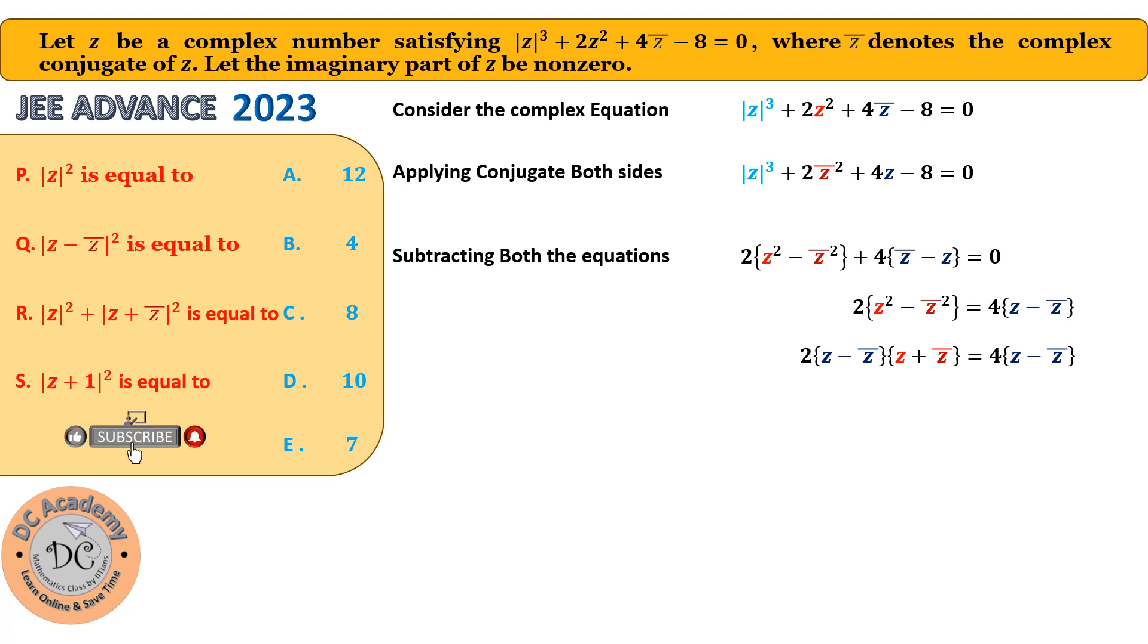But can I cancel z - z̄? Because if z and z̄ are equal to 0, then we cannot cancel that. But here notice that it is given that the imaginary part of z is non-zero. So what is the imaginary part of z? We know that for any complex number, z - z̄ = 2i·Im(z). So therefore, as the imaginary part of z is non-zero, z - z̄ will be non-zero. And hence, we can easily cancel out the factor z - z̄ from both sides of the last equation and it will be simplified as z + z̄ = 2.